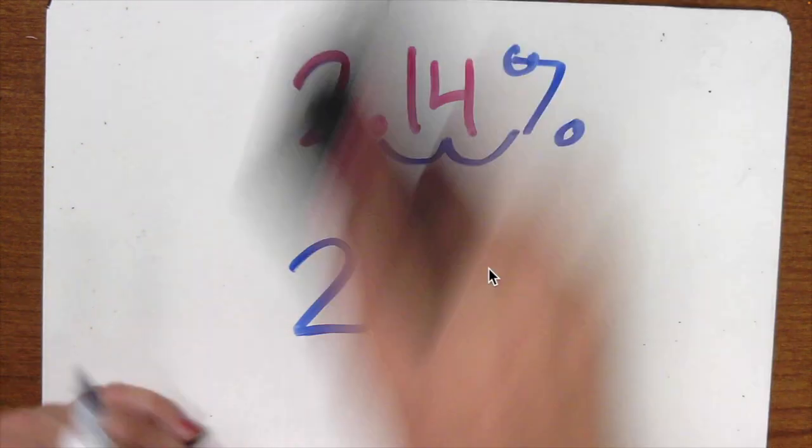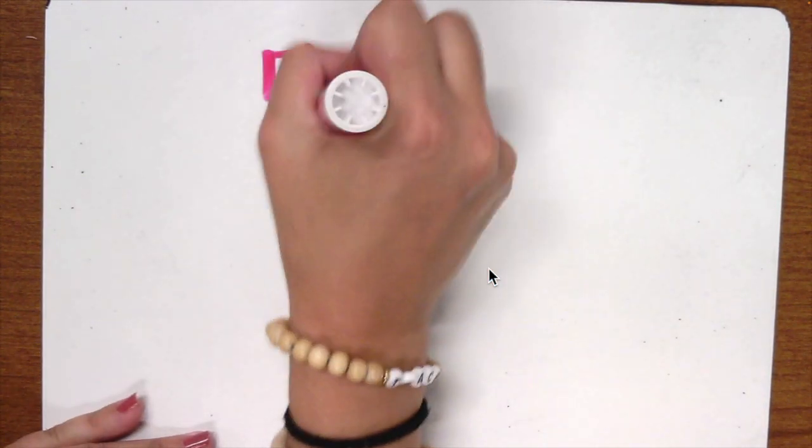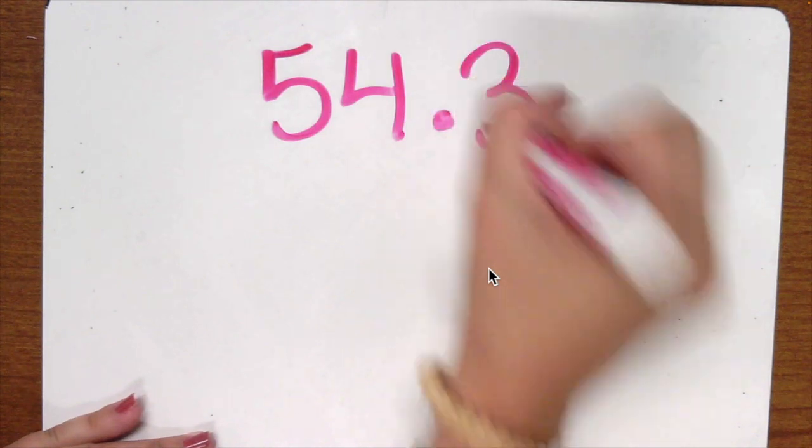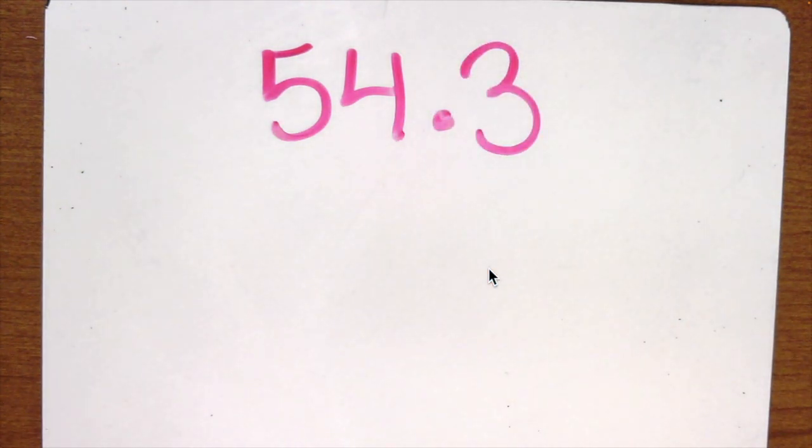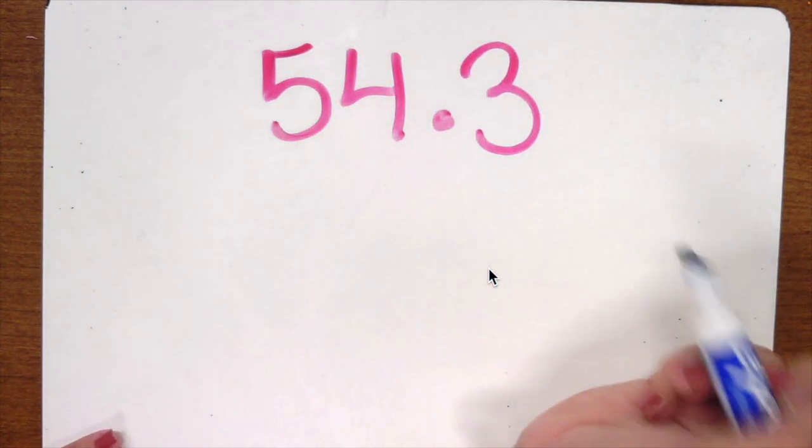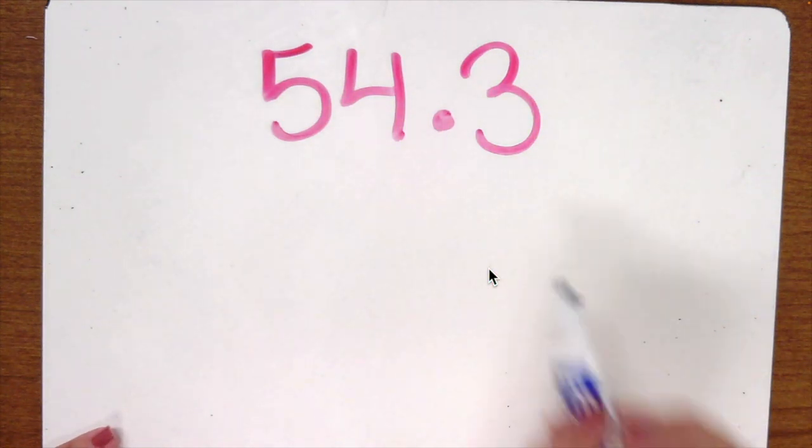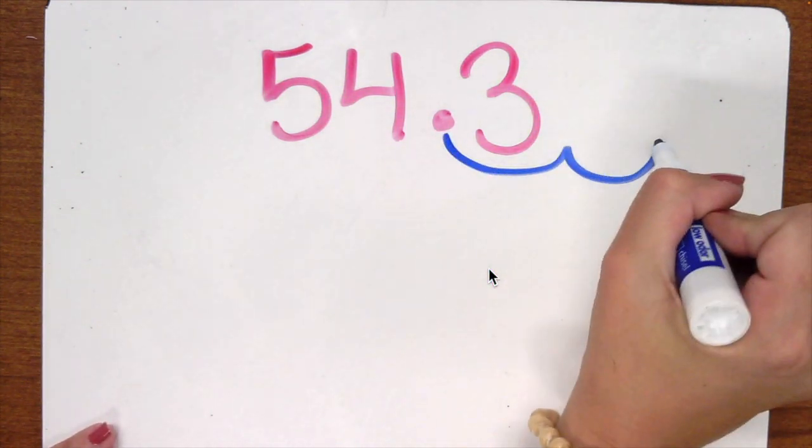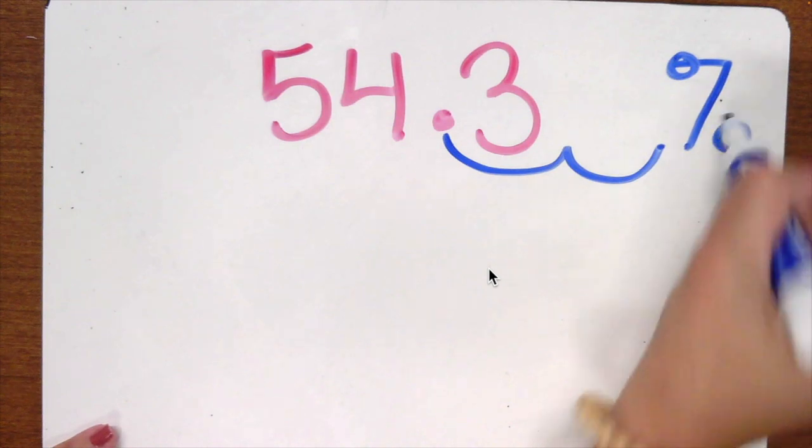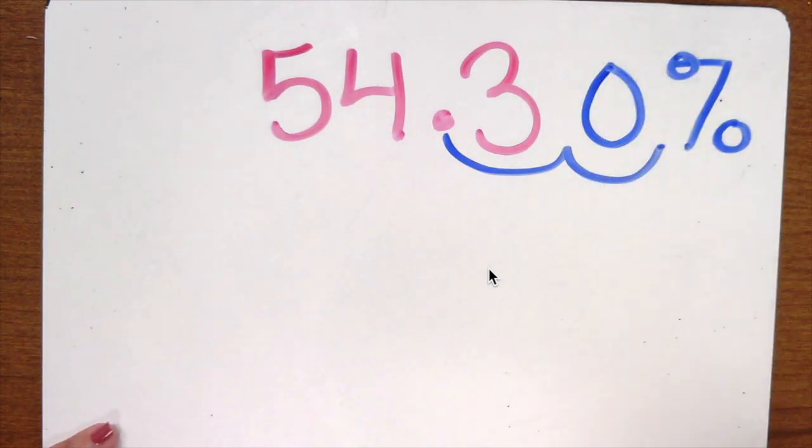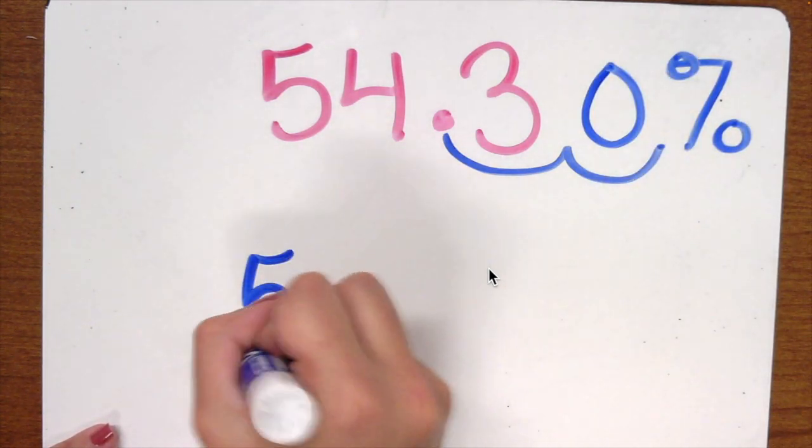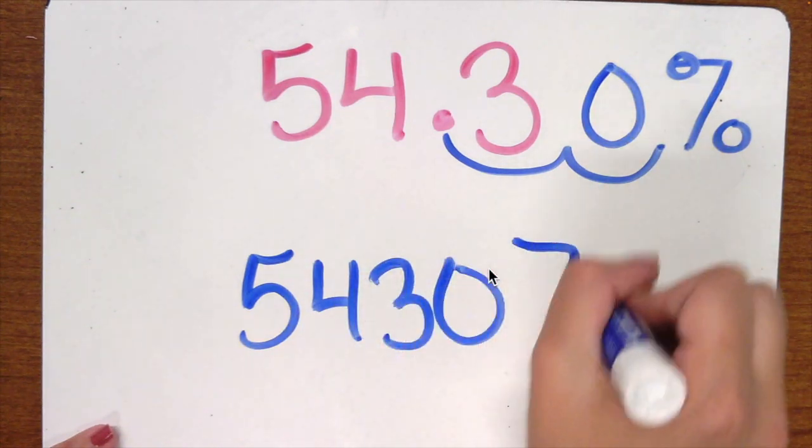So let's do another one that is big. Let's say I have 54.3. I want to make a percent so I'm jumping towards the end where the percent goes. I am jumping one, I'm jumping two, add my percent but I don't have a number here so I need to add a zero. That means that is 5,430 percent.